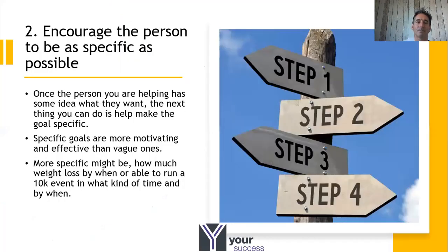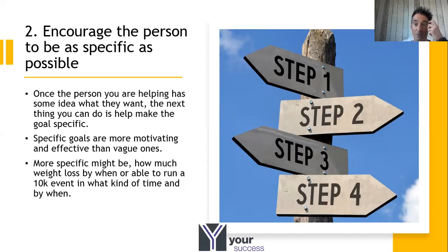The second step is to encourage the person to be as specific as possible about what they want to achieve. 'I'd like to lose some weight' needs to be more specific than that. Specific goals are more motivating and effective than vague ones. Ask how much weight loss, or when they want to run that 10k. If you can get people to be specific, it gives them something to work with and helps you plan sessions, consider how to support them, and assess whether the goal is realistic.